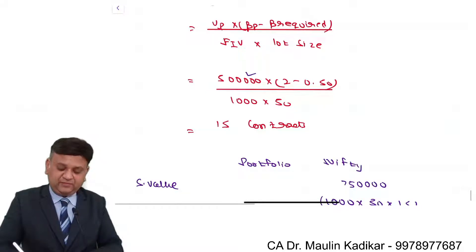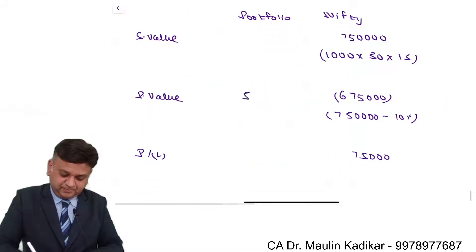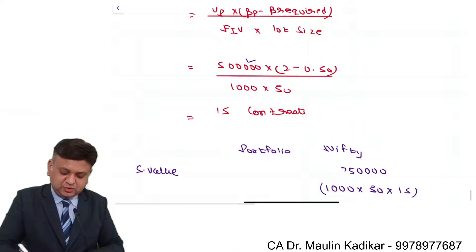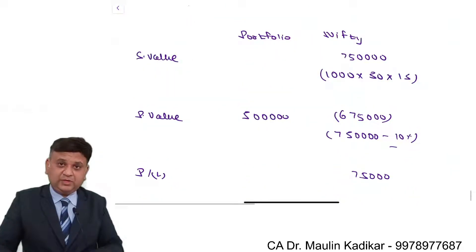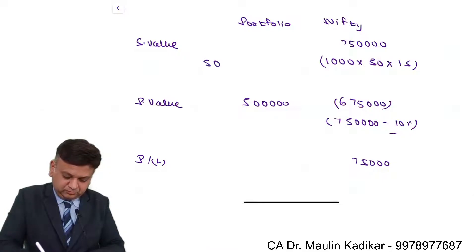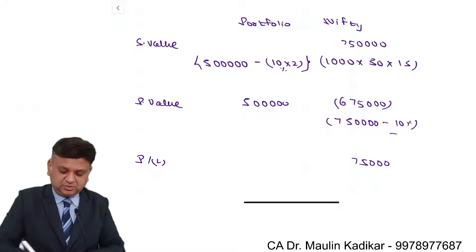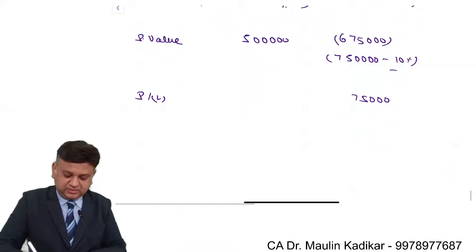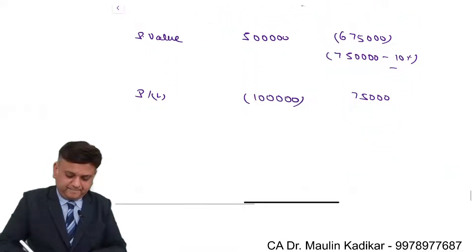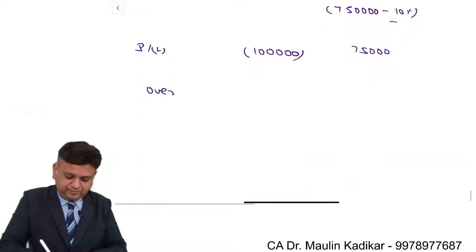Your own portfolio had a value of 5 lakhs. Its beta is 2, so it will reduce by 20%. 5 lakhs minus 10% into 2, that is 20%. So it will be 4 lakhs. 4 minus 5 is 1 lakh negative. So overall it is 25,000 negative.